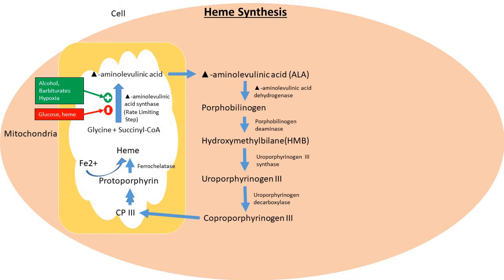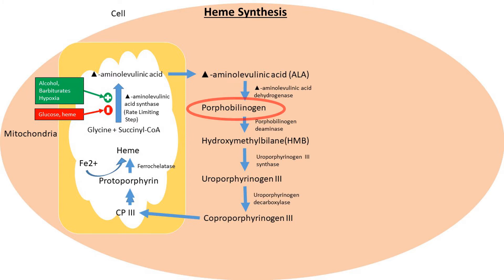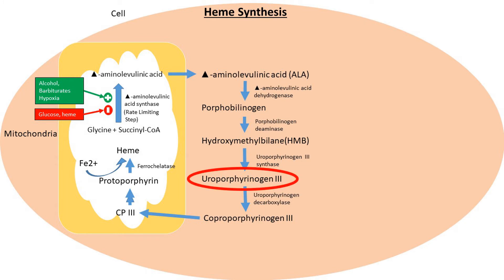These stimulators and inhibitors become significant when we discuss the disorders. The delta-aminolevulinic acid formed then moves to the cytosol and is converted into porphobilinogen by the enzyme delta-aminolevulinic acid dehydrogenase. Porphobilinogen is then converted into hydroxymethylbilane (HMB) by the enzyme porphobilinogen deaminase.